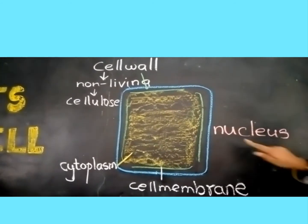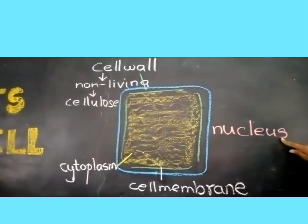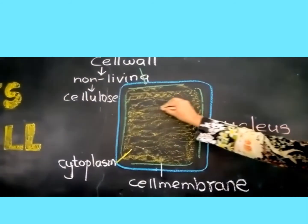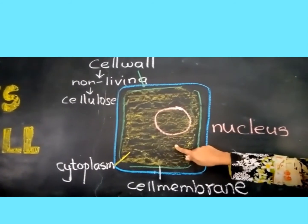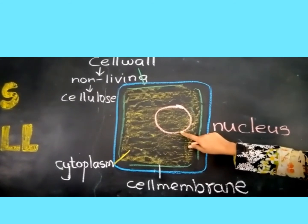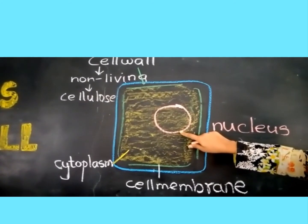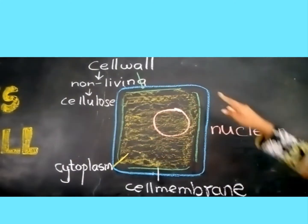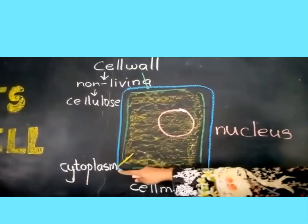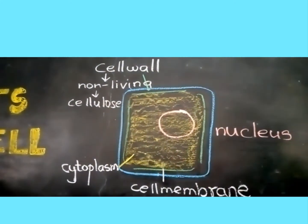Now we will discuss the nucleus. The nucleus is a round or oval shaped body present inside the cytoplasm. The nucleus acts like a brain for the cell as it controls all activities of the cell. The nucleus and the cytoplasm together form the protoplasm.